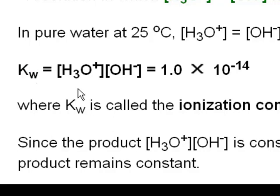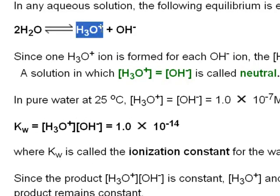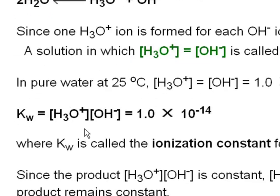If we look at the product over reactant idea, the products are H3O+ and OH⁻. That's why they're here, multiplied together. The denominator would be the reactant, but it's simply water, and we don't include water in the equilibrium constant.